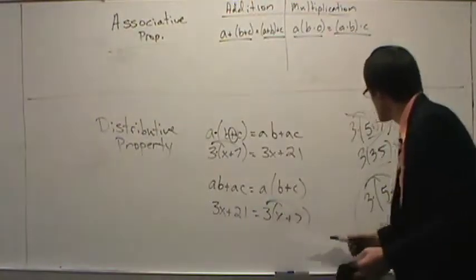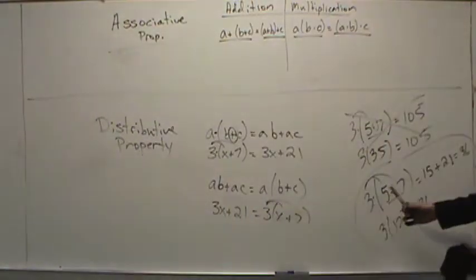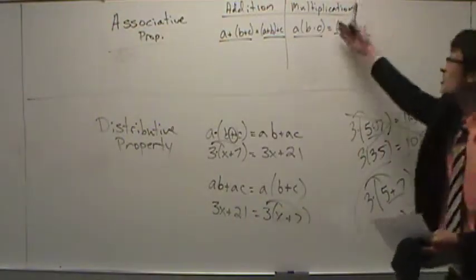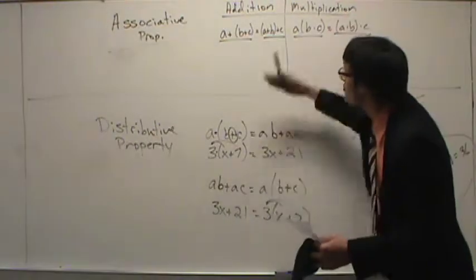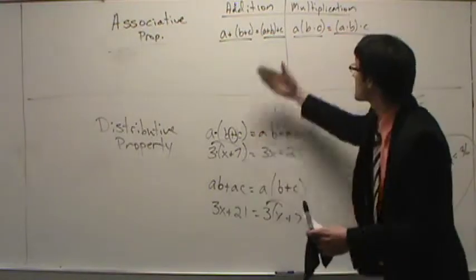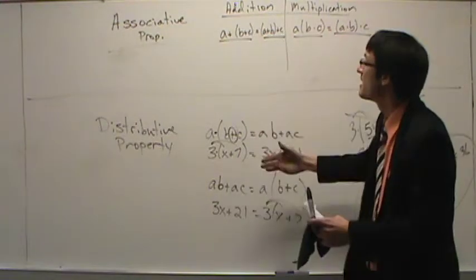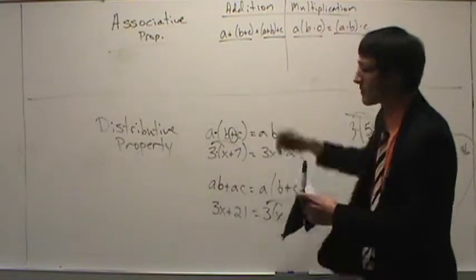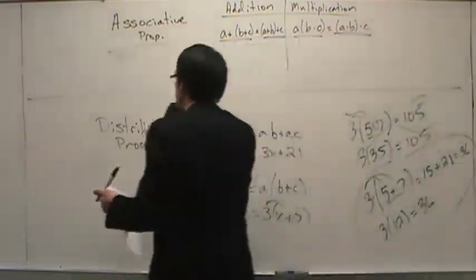Multiplication meets multiplication — you distribute when multiplication meets addition. The clue for these two properties is that you're looking at parentheses. So if you see parentheses, it's either the distributive property or the associative property.